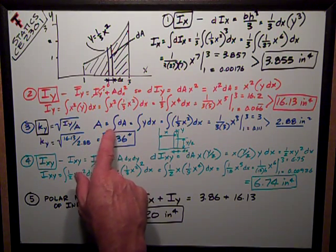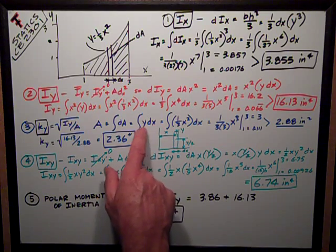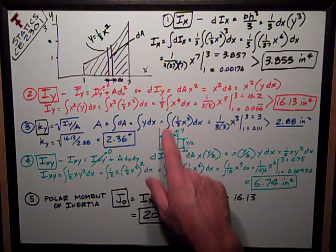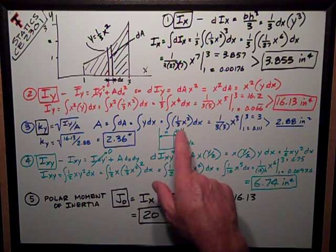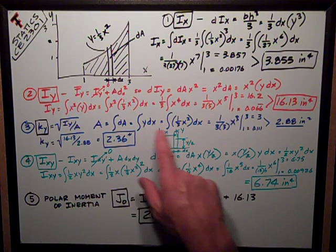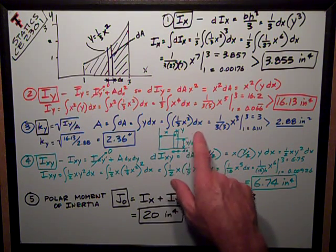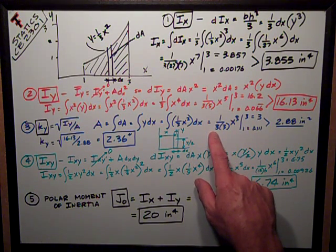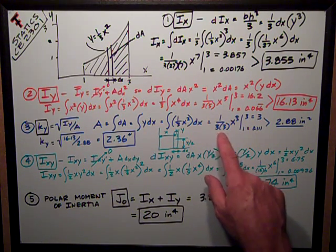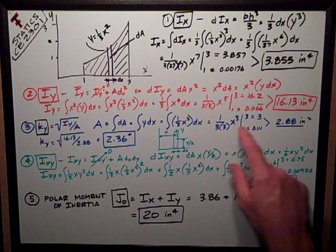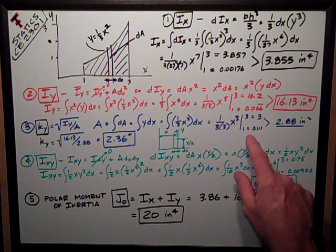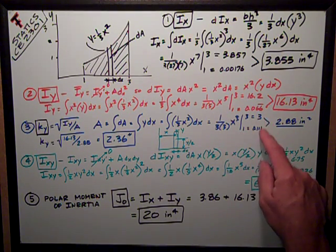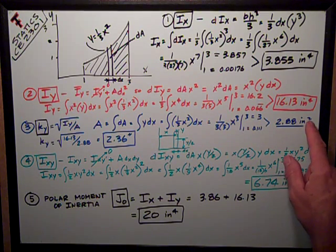It's the integral of dA, which is the integral of y dx, that little strip, which equals the integral of substituting in this value for y, 1/3 x² dx. Evaluate that, the integral of that is 1 over 3 times 3, x³. Evaluate it at 3 and I get 3, evaluate it at 1 and I get 0.111 repeating. Subtract that one from that one, and I get 2.88 in².